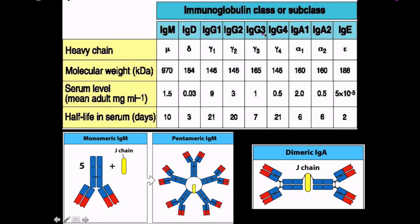These are the actual immunoglobulin classes and individual subclasses — the isotypes, which are only dependent upon the constant region. We have IgM, IgD, IgG and its subclasses IgG1 through IgG4, IgA1, IgA2, and IgE. The serum levels shown here give us information about molecular weight and serum level in adults, useful for determining which isotype is most versus least abundant in the blood.